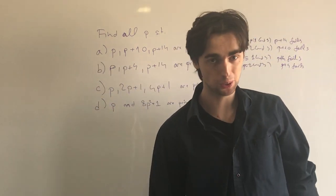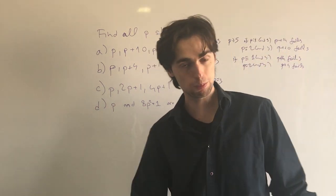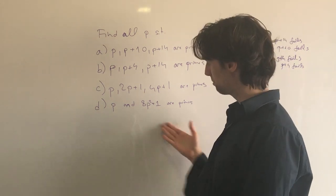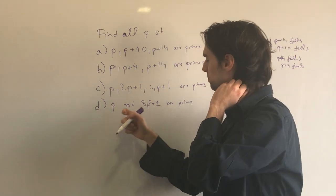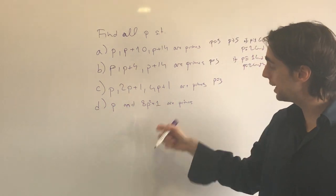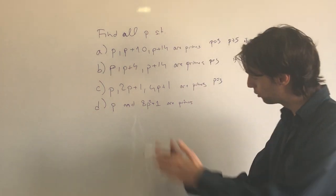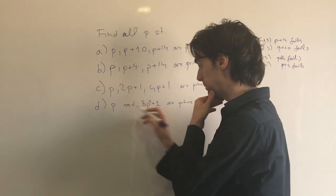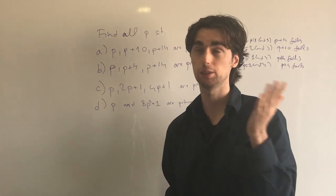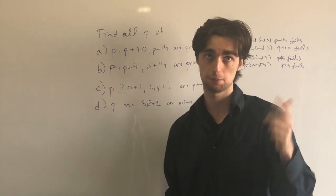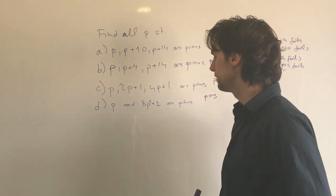Now let's do part D. I invite you to pause for five to ten minutes and try to figure it out. For part D, with P equals 2, we get 8 times 4 plus 1 = 33, which is divisible by 3 — doesn't work. With P equals 3, we get 8 times 9 plus 1 = 73. Is 73 prime? Yes it is, so P equals 3 works.